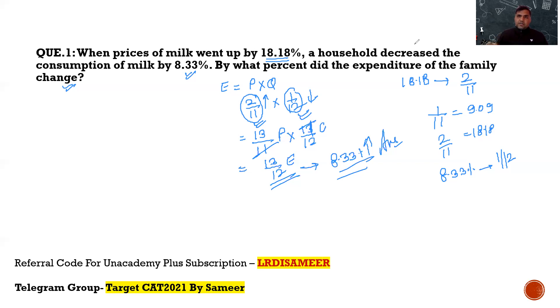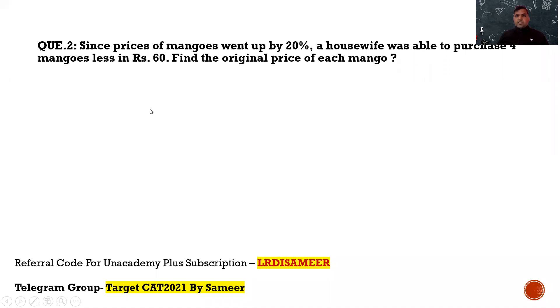Let's move on to the next question. Here's question number 2. It says the prices of mangoes went up by 20 percent. A housewife was able to purchase 4 mangoes less for Rs. 60. Find the original price of the mangoes.